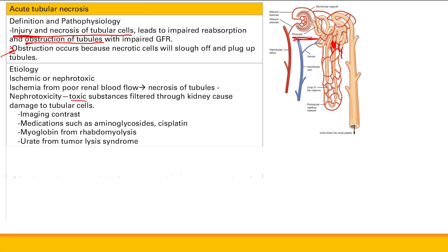You can also have nephrotoxic problems, because toxic substances get filtered through the kidney and come into contact with tubular cells, causing damage. Imaging contrast is one cause — when thinking about getting a patient a CT with contrast, you really need to consider their kidney function, because you run the risk of damaging their kidneys even more.